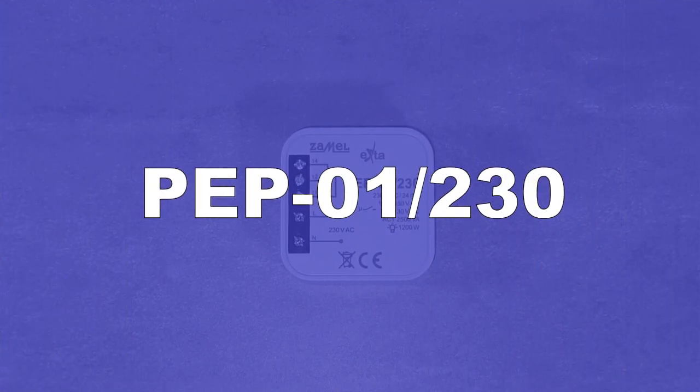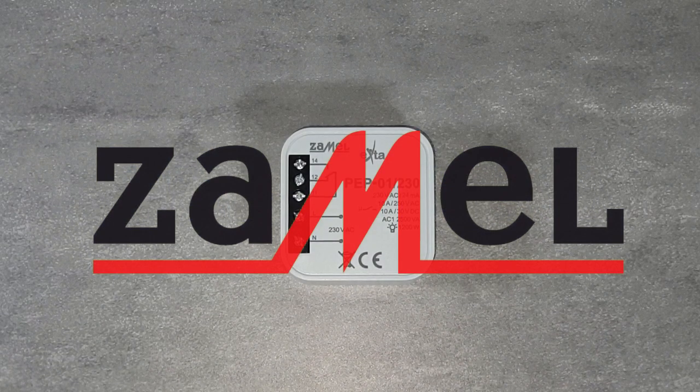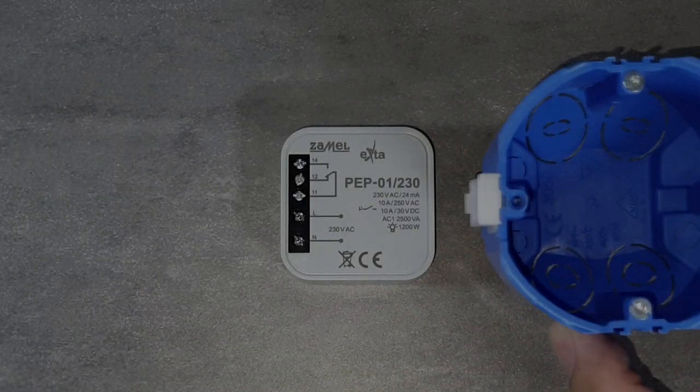The PEP01-230 flush-mounted electromagnetic relay is a compact device for galvanic separation of 230V circuits from low-voltage circuits, as well as for extending the maximum power connected to the control system.